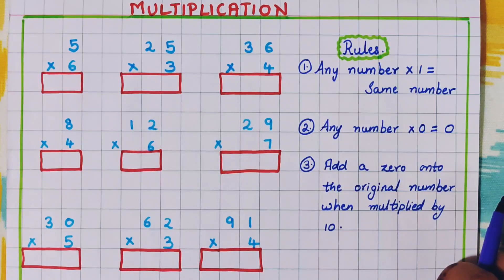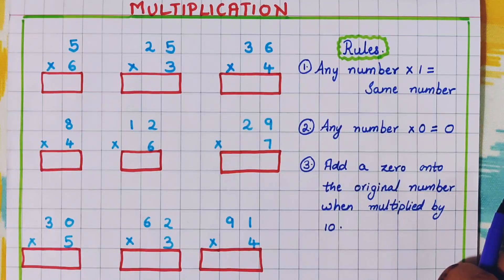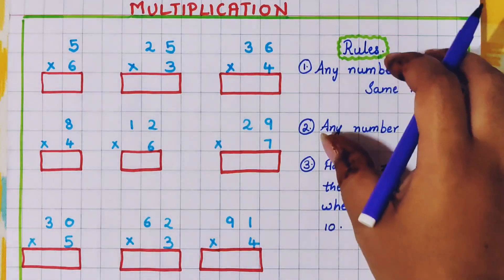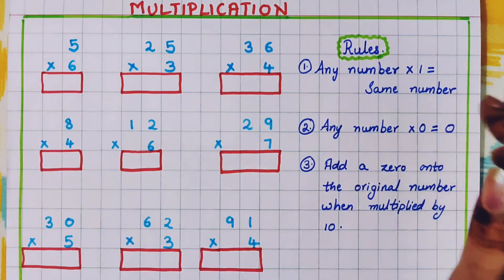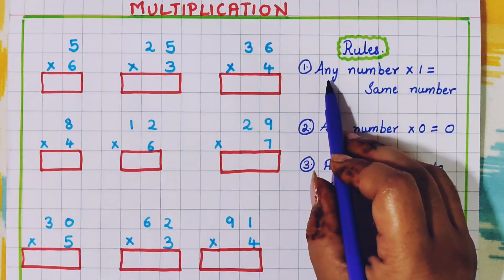For multiplication, the first thing we have to know are the tables. We have to be perfect in tables to do the multiplication. Now there are some set of rules that we follow while multiplying. So let's see them.